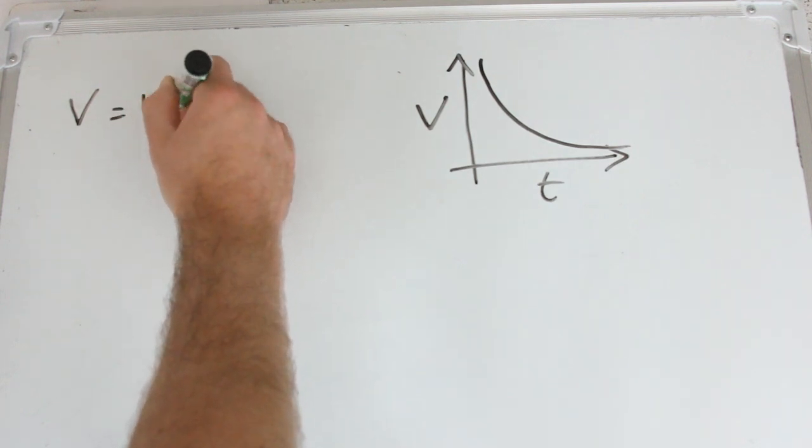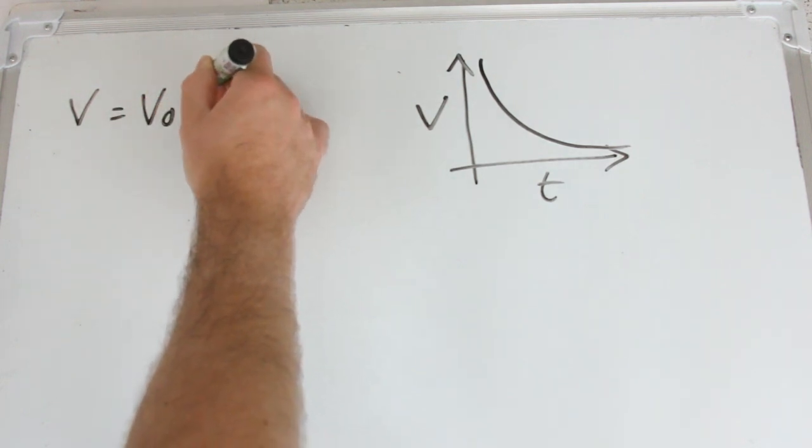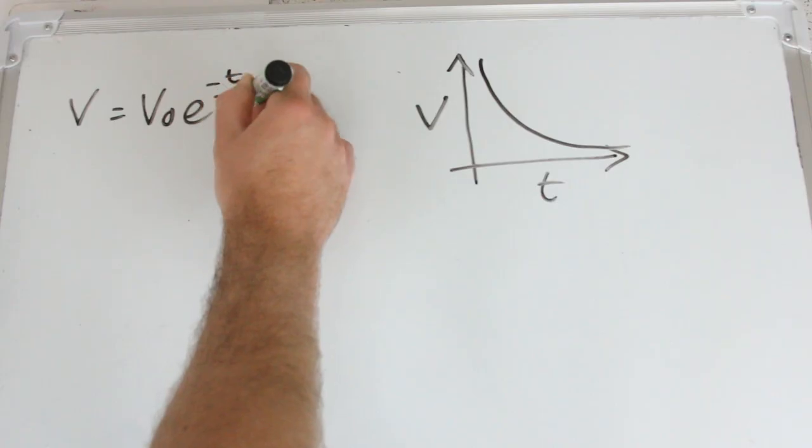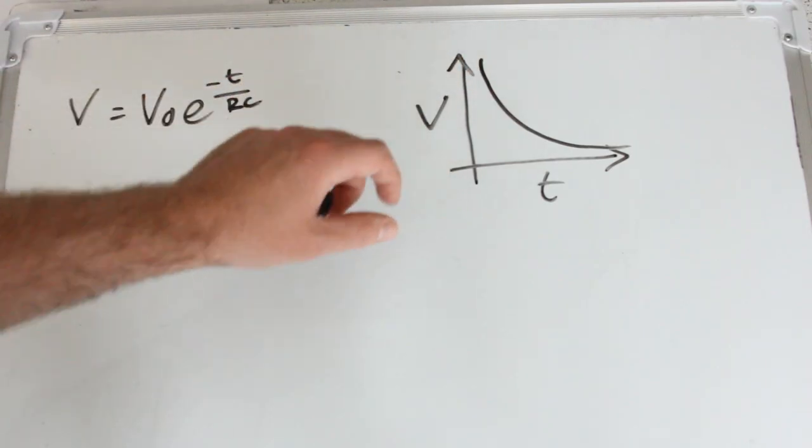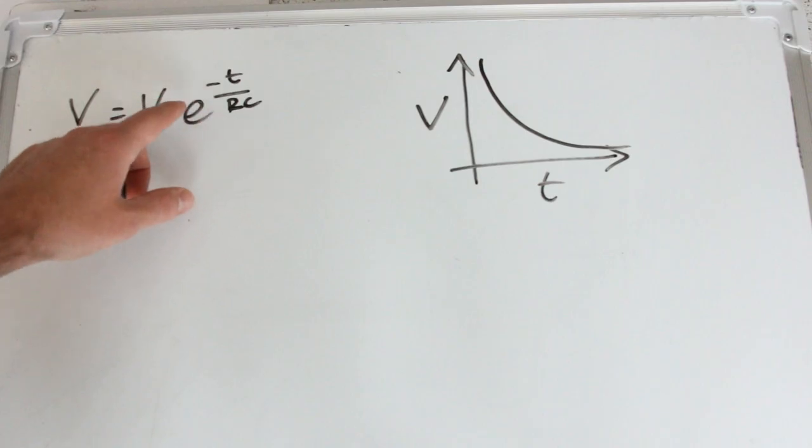V is V0 times e to the power of minus t over RC. Where this is your quantity at any time, this is your initial quantity at the very start V0 here, this is the exponential number, and this 1 over RC is the time constant.